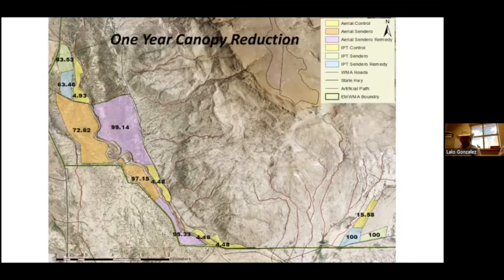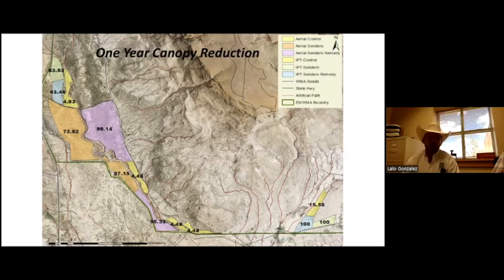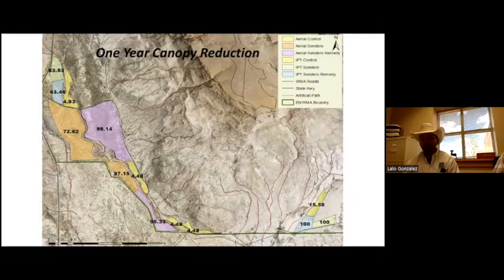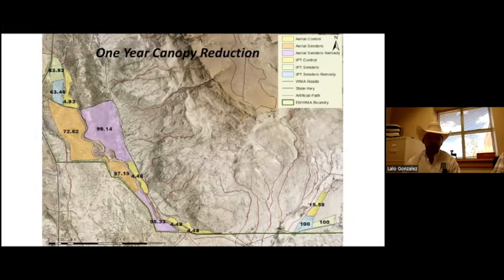In year one, we saw a major canopy reduction — the plants defoliated within about a week of application, and it looked really promising. There were many plots taken out for monitoring vegetative changes as well as wildlife use, specifically scaled quail. We did notice throughout the study that there may have been a negative effect on forbs from the application, as one of the active ingredients from Remedy is known to be a broadleaf forb suppressant, which may have affected quail usage in that area.